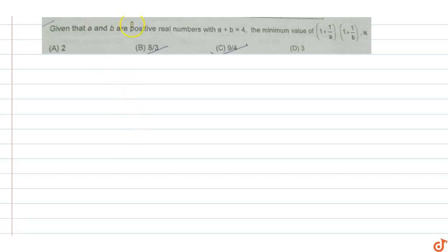In this question, given that a and b are positive real numbers with a plus b equal to 4, the minimum value of (1 + 1/a) times (1 + 1/b) needs to be found.